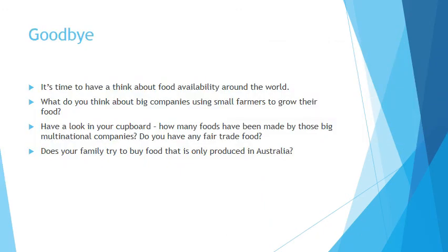That's it for our presentation today. Have a think about food availability around the world — look at what you've got in your pantry at home. How many foods have been made by big multinational companies? Have you got any fair trade food in your cupboard? Does your family try to buy food produced in Australia, or just whatever's cheapest? What do you think about big companies using small farmers in developing areas to grow their food? These are things we'll be discussing in class next week.